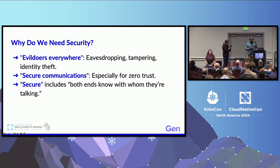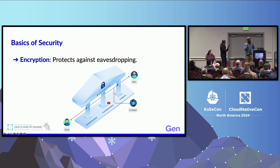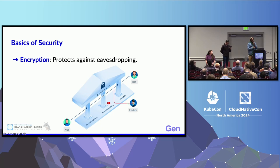For instance, if someone intercepts and alters a transaction, something could be easily switched during transmission. Third, identity theft. Without a secure system to verify identities, attackers can impersonate others, creating a risk for anything from fraud to unauthorized access to systems. For all these reasons, secure communication protocols are not optional — they're essential. In a zero-trust model, where we verify everything and trust nothing by default, secure communication becomes even more critical.